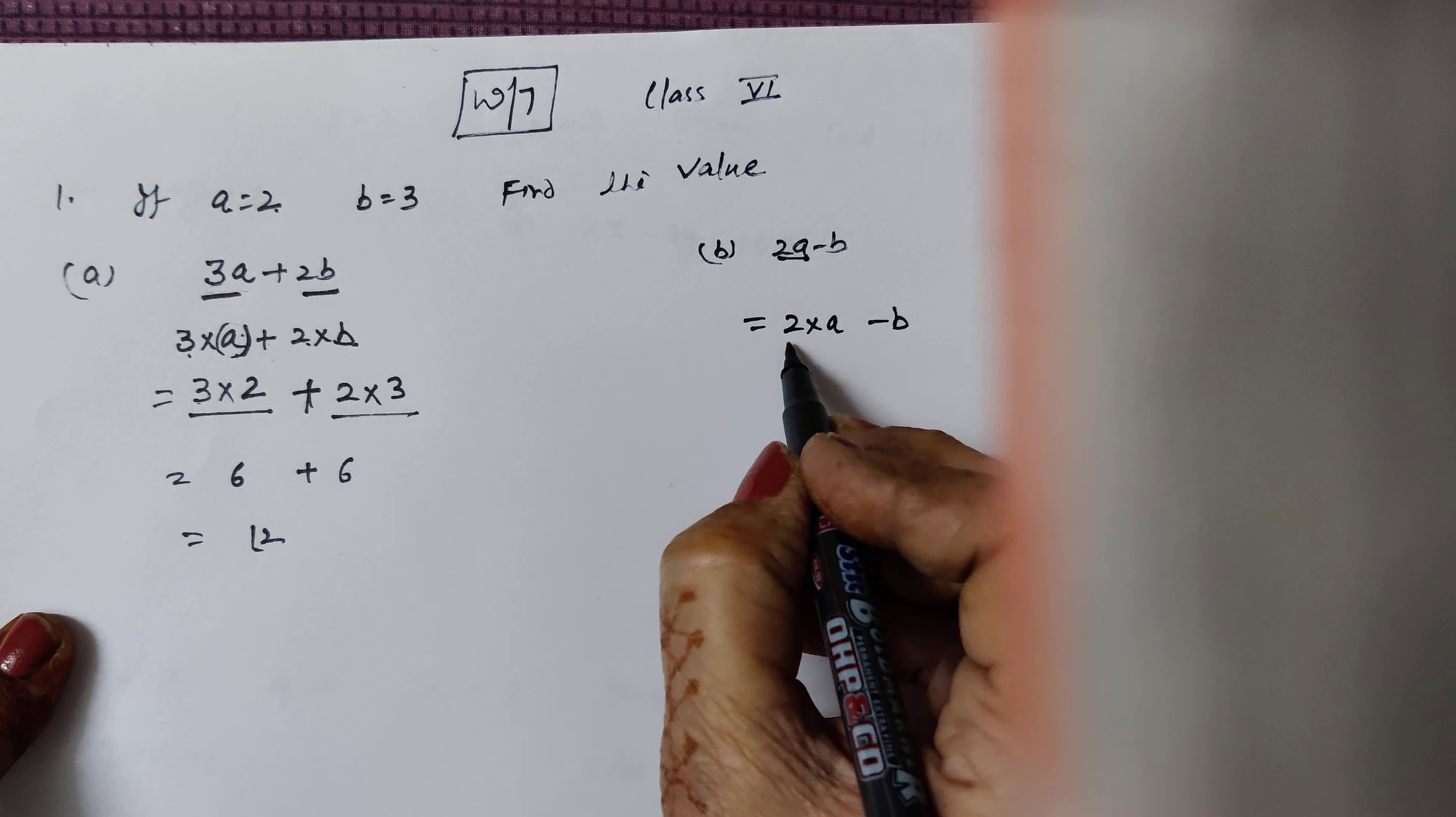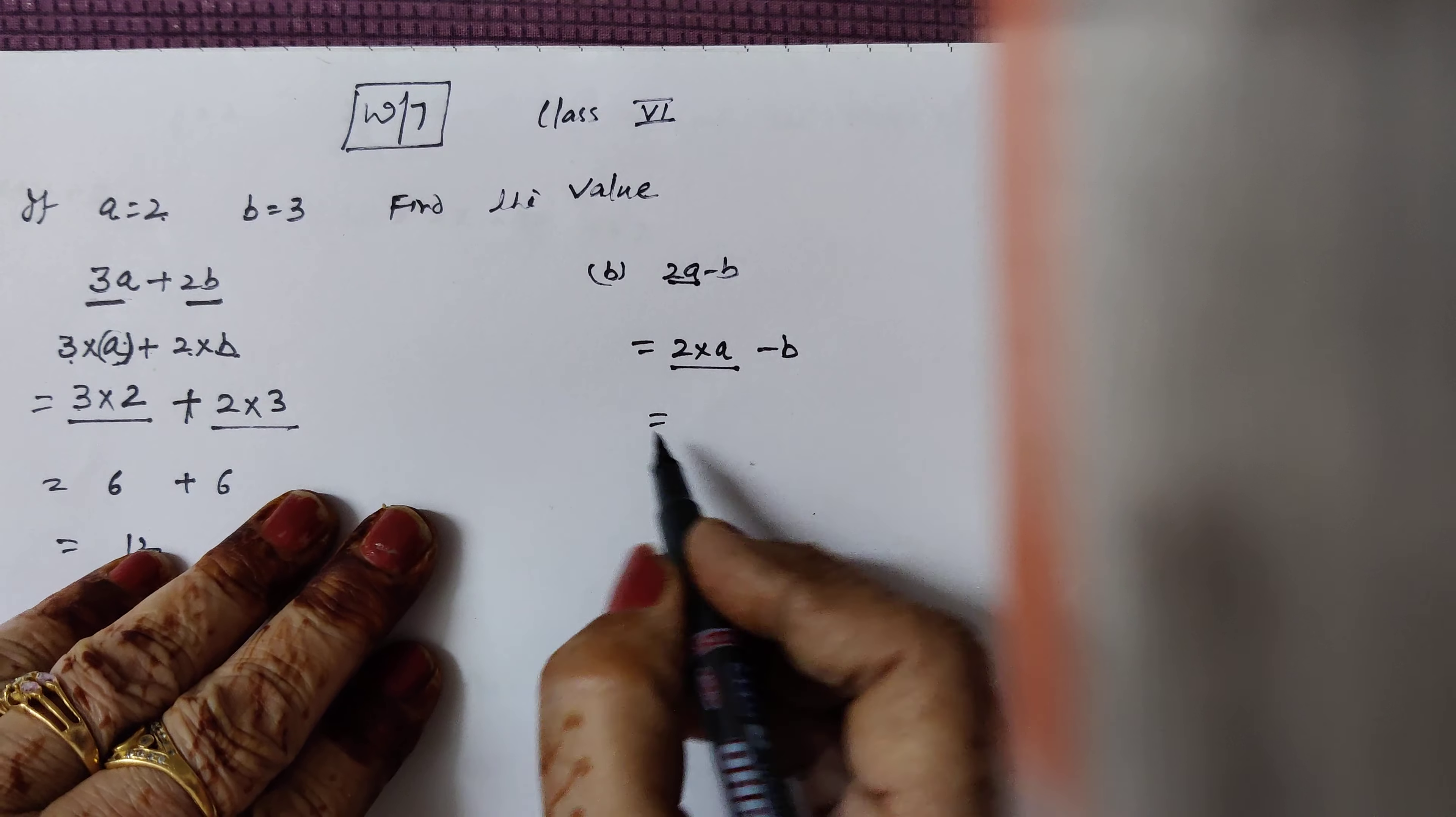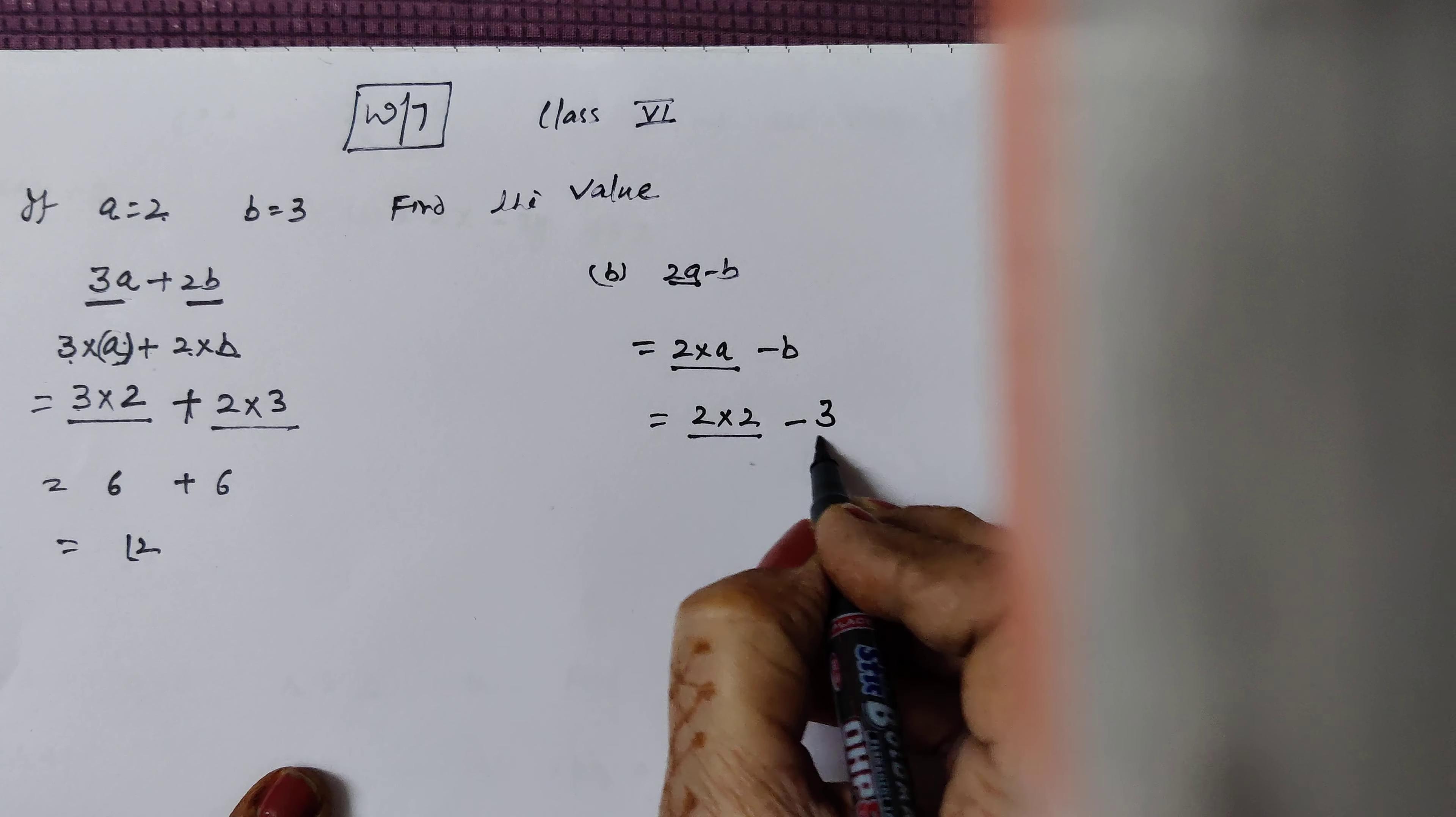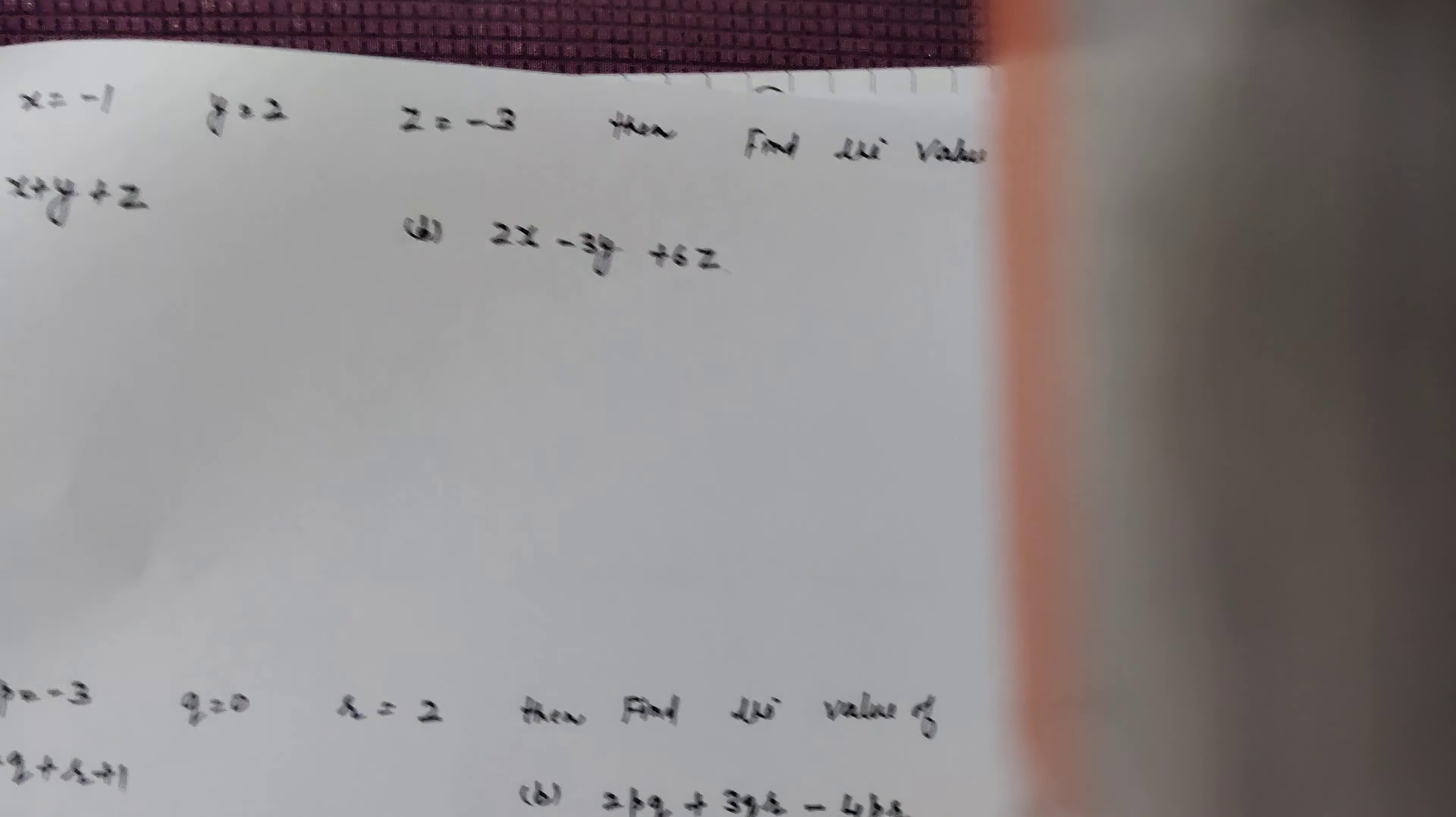Again, one more sum is there. There is 2 into A minus B. 2A minus B, so here it is written and the place of A, I am filling value A is equal to 2. So here I am filling 2 into 2 minus, at the place of B there is 3. So now there are 2, 2's are 4, minus 3, answer is 1.